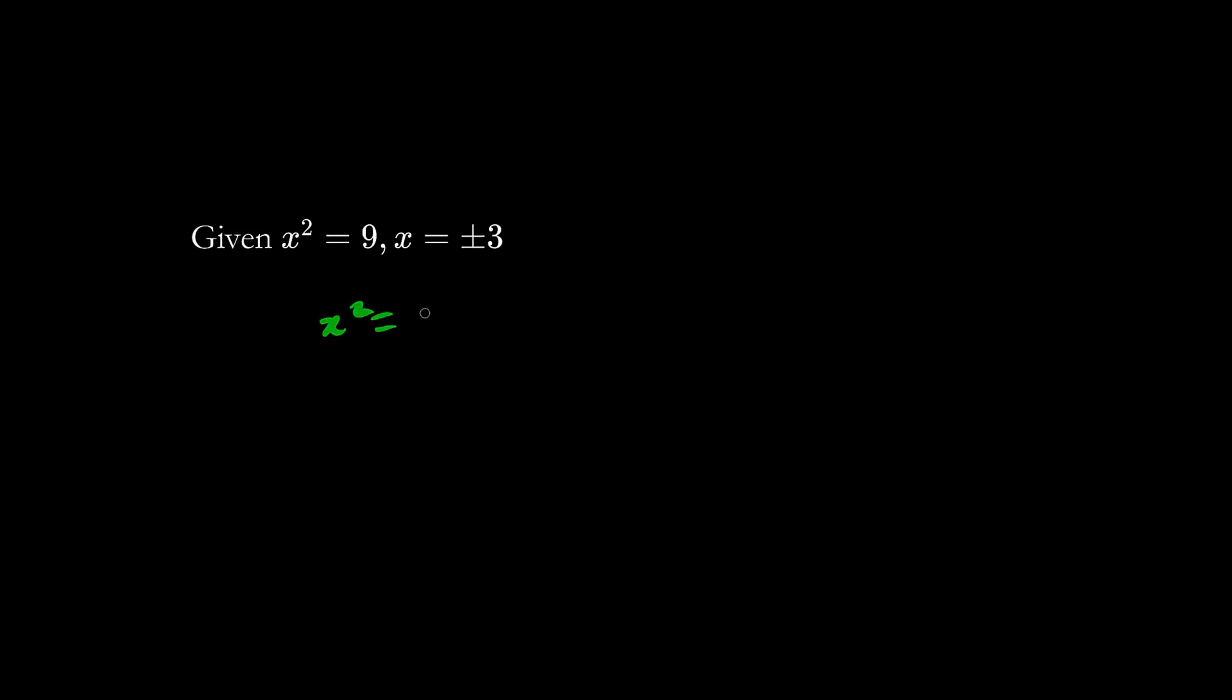Given x squared equals nine, we square root both sides. We have plus minus the square root of nine which is three. So this is a correct statement. True.